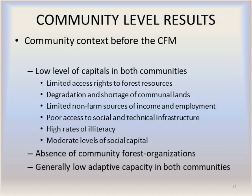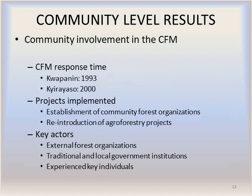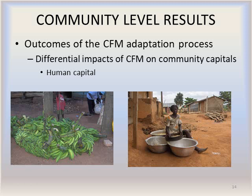The results showed that before the forest policy, both communities lacked the capital assets and institutions that make communities resilient or adaptive. When the programs were introduced, community members benefited a lot from the help of external organizations, although local and traditional institutions played a role, as well as key individuals. In both communities, forest organizations were first established, followed by the implementation of agroforestry projects. The impacts of these programs were varied across the community capital assets. Human capital, for instance, was frequently mentioned by community members.